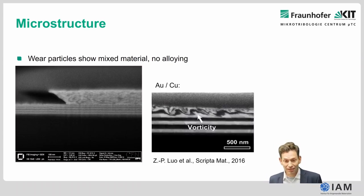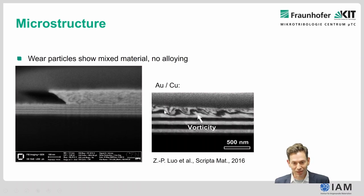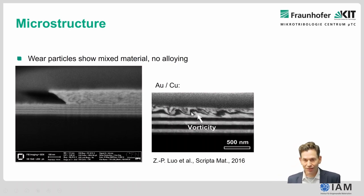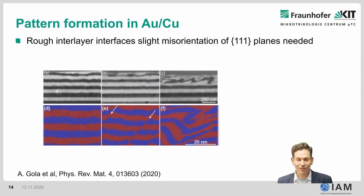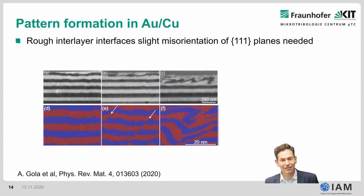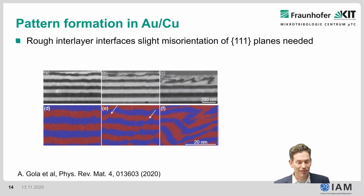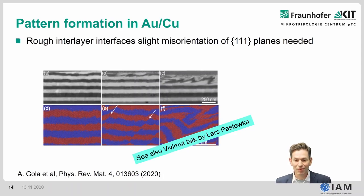In 2016, similar experiments were published by Aluo and co-workers from Karlsruhe, who showed vortex patterns and mixing in a gold-copper multilayer sample upon shearing. These multilayers were also investigated using molecular dynamics simulations by Adrien Goulart and Lars Pastewka, who analyzed the pattern formation and found that a rough interlayer interface and slight misorientation of the 111 planes are needed to induce this pattern formation. Please see the Bibimat talk by Lars Pastewka for details.